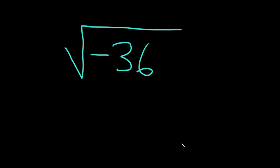Hi, in this problem we have to simplify the square root of negative 36. Basically, whenever you see something like this and you have a negative inside the square root, your mind should automatically turn that into an i.